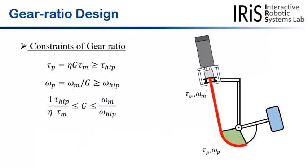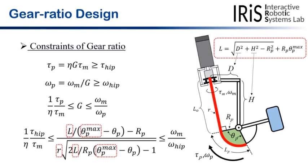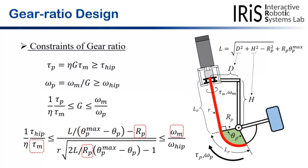In order to satisfy the requirement at all hip joint angles, the gear ratio range was set as follows. The minimum boundary is determined by motor and hip joint torque, and the maximum boundary is determined by motor and hip joint angular velocity. Once most of the parameters have already been determined, the gear ratio can be designed by adjusting the pulley radius...